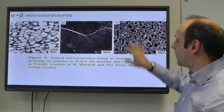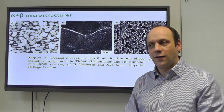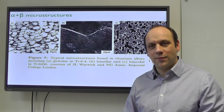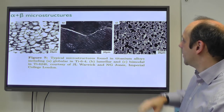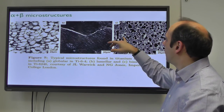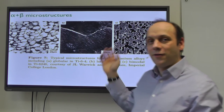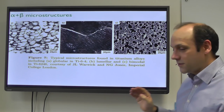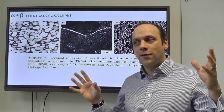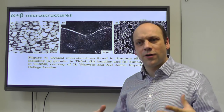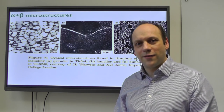In the SEM backscattered image, you get more backscattering from elements with higher atomic number. Beta stabilizers like molybdenum give brighter contrast and appear white, while alpha is black. In light microscopy it happens to be the other way around. It's worth thinking about what the contrast mechanisms are and therefore what they imply about the phases present.